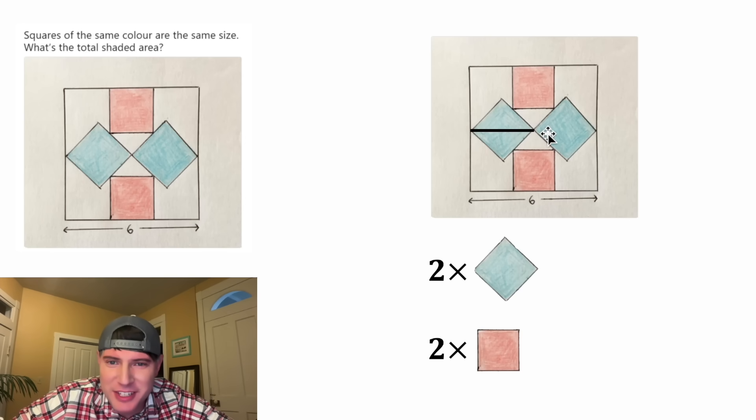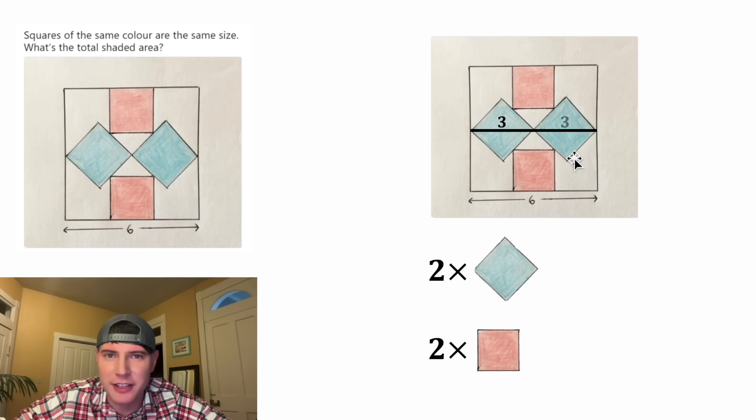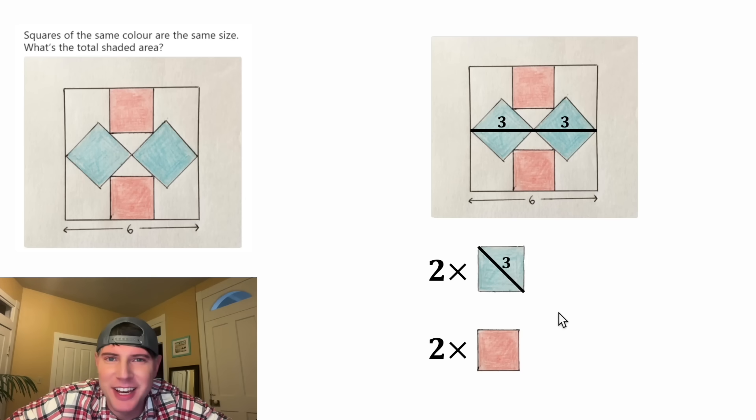So first let's construct this diagonal here. It's going to be half of this side length or three. And same thing for this diagonal. It'll also have a length of three. And we can do the same thing here. Let's rotate it and find the side lengths.